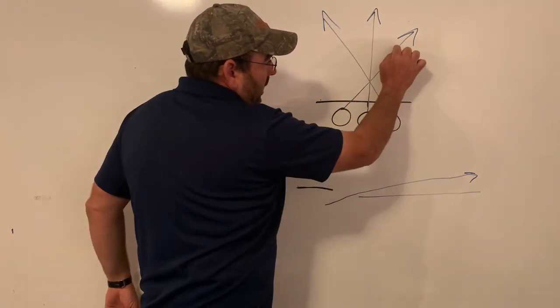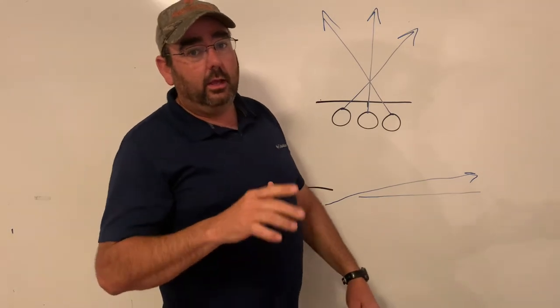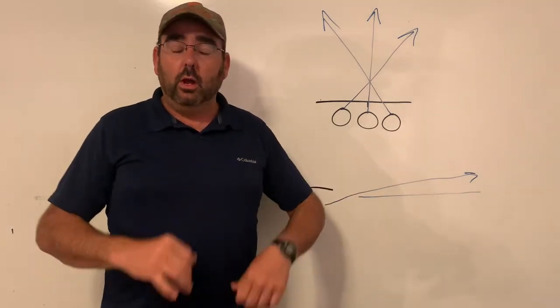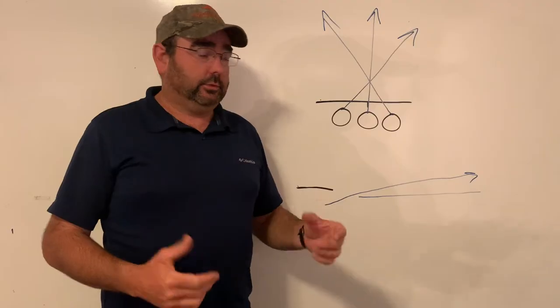They see the target come out, they can read the target if it's low or if it's high, and from that point they can place the gun where they need to to break it. You have two shots to hit the target.